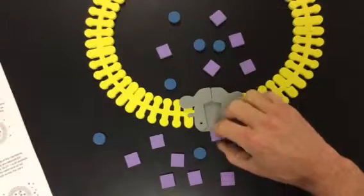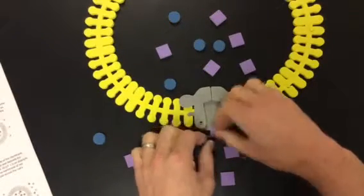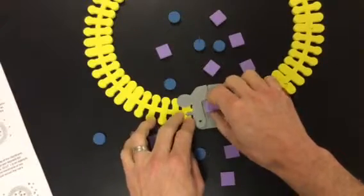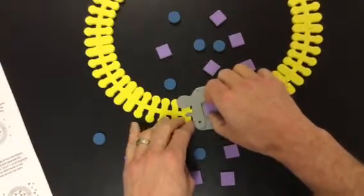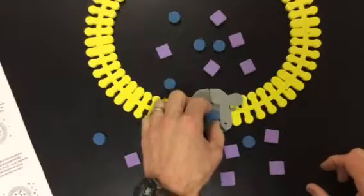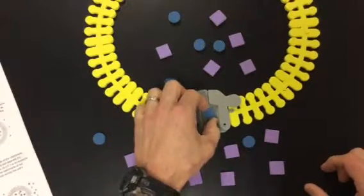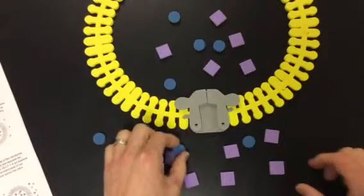So what happens is the gated channel will allow the sodium to enter. And you notice the shape does matter for this one - the circle doesn't quite match the shape so it does not fit.